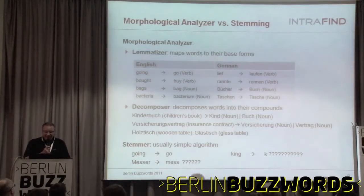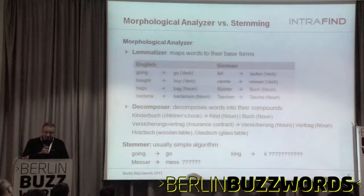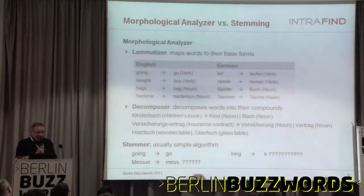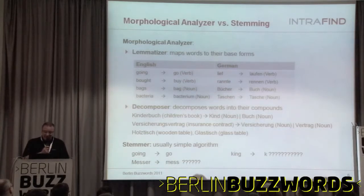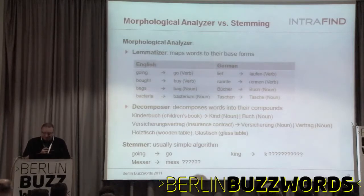The third thing it does is give you word categories — it finds out that 'going' has base form 'go' and it's a verb, and 'bacteria' is a noun. With an algorithmic stemmer, it may work well for English — it maps 'going' to 'go' by throwing away the suffix 'ing' — but what does it do with 'king' if you don't have an exception list? It may generate the word 'k,' which is not very helpful.